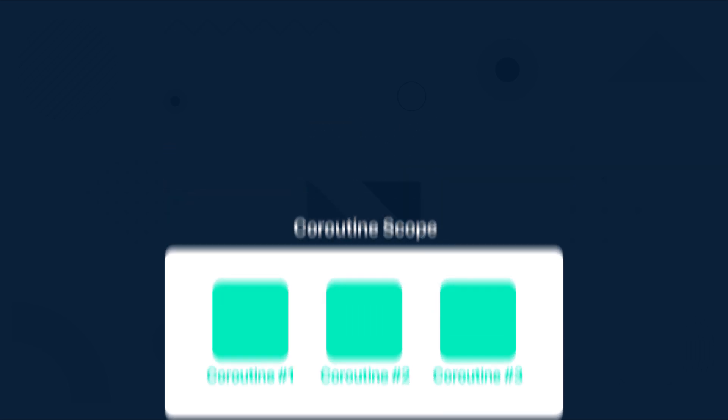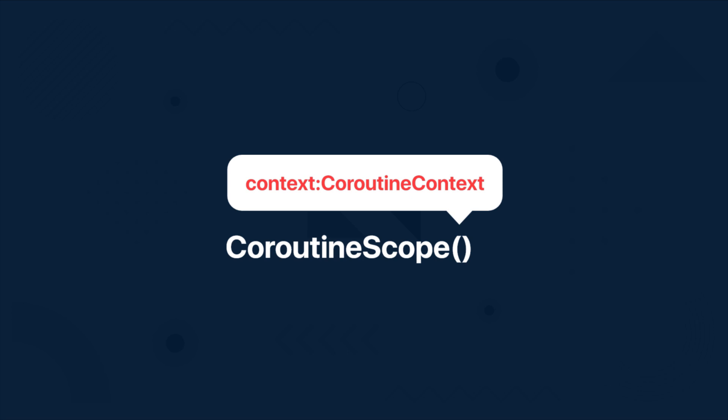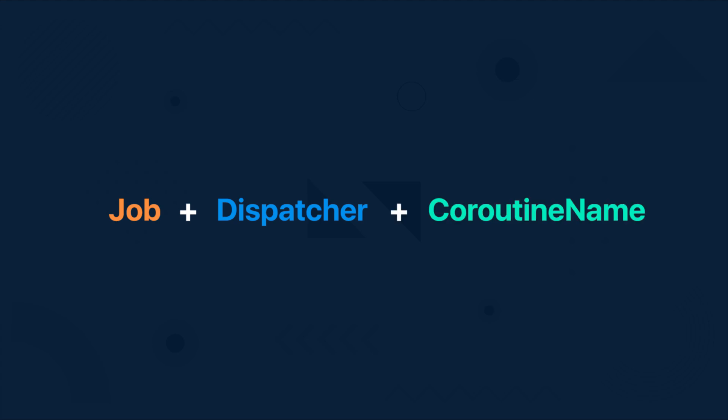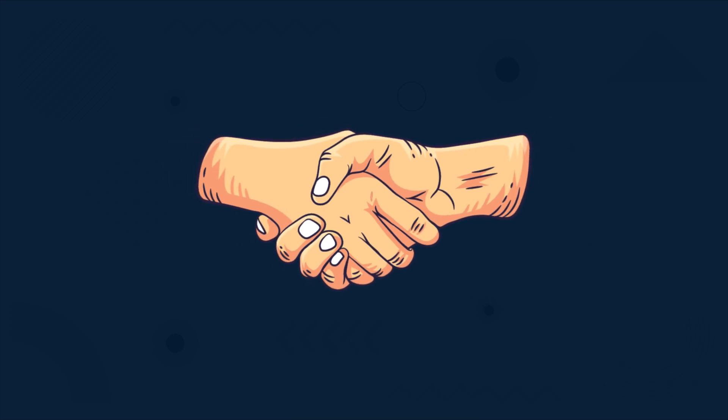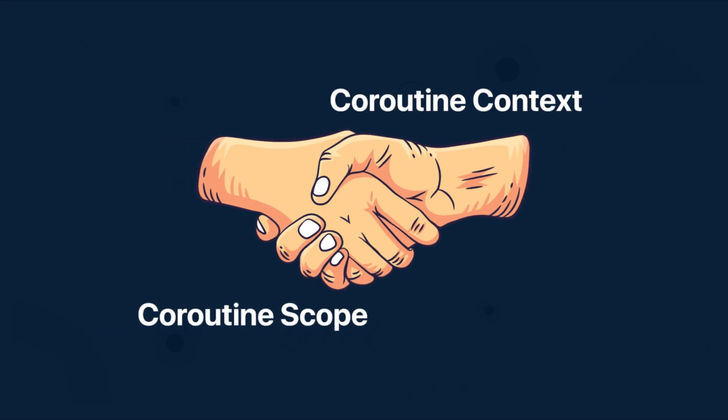Coroutine scope takes coroutine context as a parameter, and coroutine context is a set of various elements. The main elements of coroutine context are the job of the coroutine, its dispatcher, and the coroutine name. Coroutine scope and coroutine context are closely related — you can say that coroutine scope formalizes the way the coroutine context is inherited.